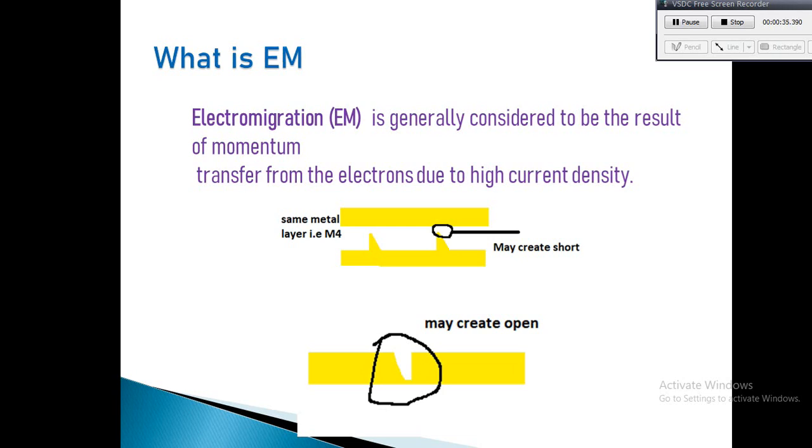Electromigration is the gradual displacement of metal atoms in semiconductors. It occurs when the current density is high enough to cause the drift of metal ions in the direction of electron flow. This density depends on the magnitude of forces that tend to hold the ions in place, including the nature of the conductor, crystal size, the interface, and the magnitude of forces that tend to dislodge them, including current density, temperature, and mechanical stress.